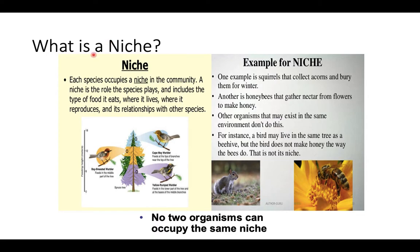So what is a niche? A niche is the role a species plays in the community. It is a combination of many things — what that species eats, where they live (habitat is part of the niche), where it reproduces, and its relationship with other species. One example is a squirrel that collects acorns and buries them for winter — that's its role in the community.